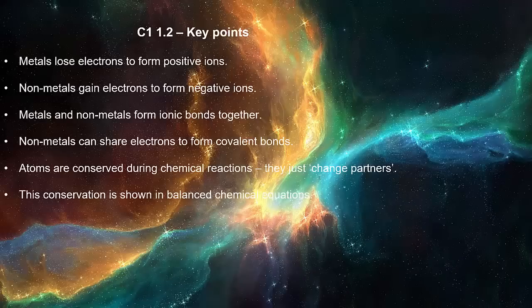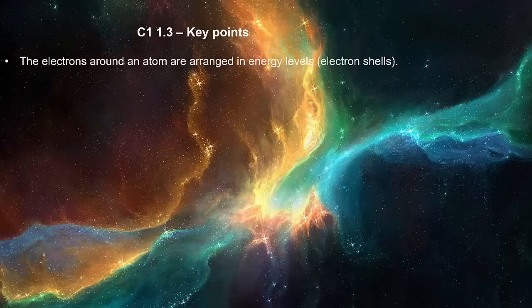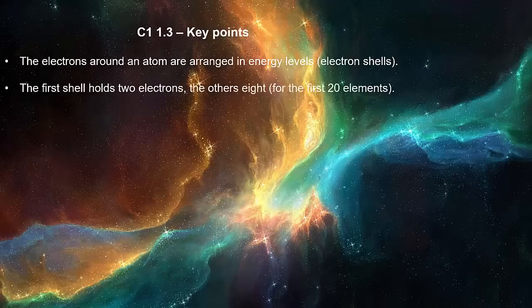This conservation is shown in balanced chemical equations. The electrons around an atom are arranged in energy levels, called electron shells. The first shell holds two electrons, and the others hold eight, for the first 20 elements.